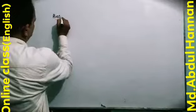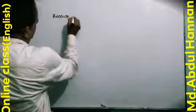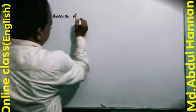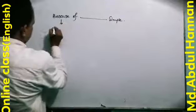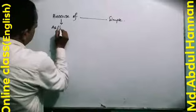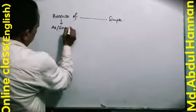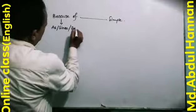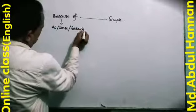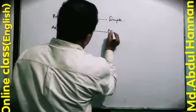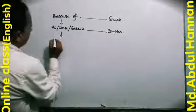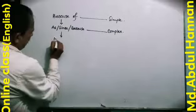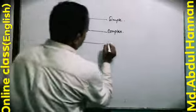Because of — in simple sentences, to make complex sentences, we use subordinating conjunctions: as, since, or because. For compound sentences, we use the coordinating conjunction: and.